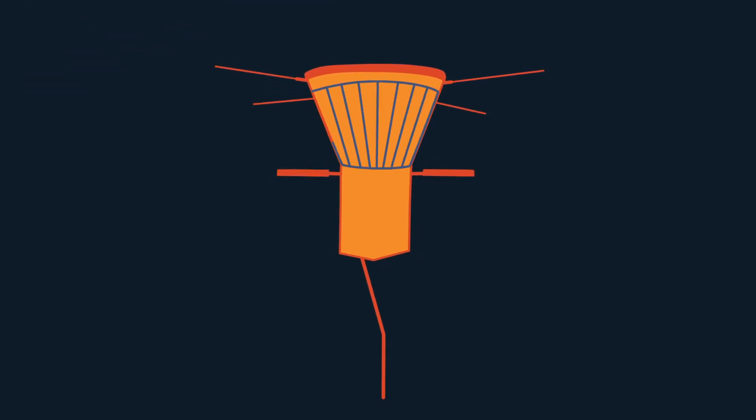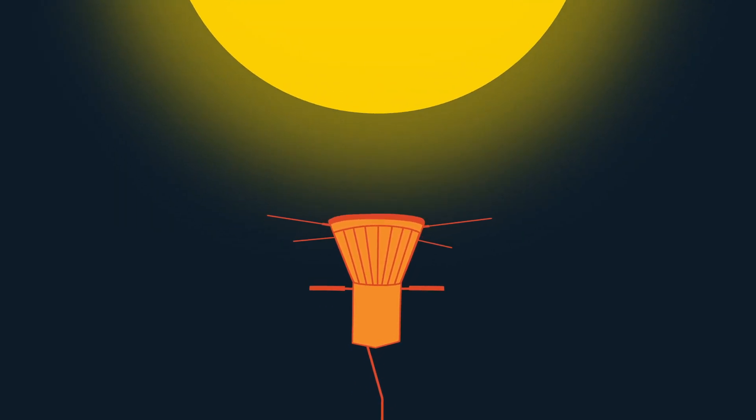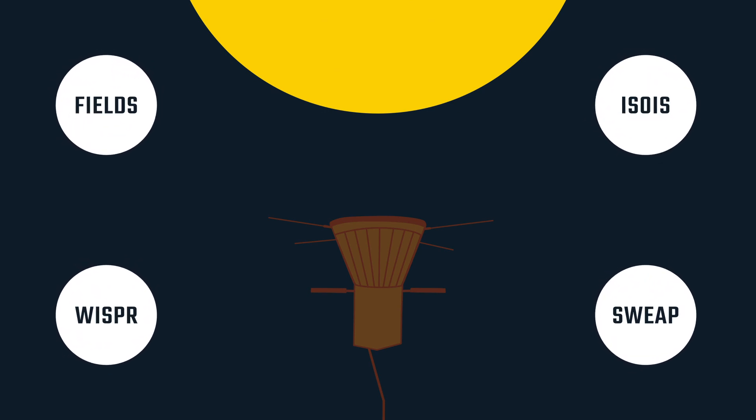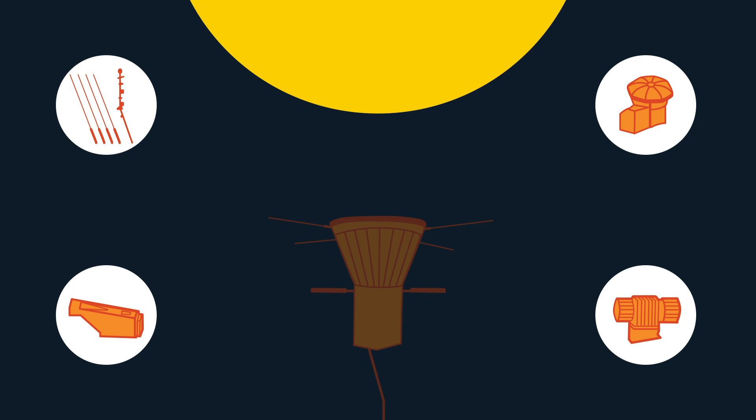Parker Solar Probe also carries a first-of-its-kind water-cooled solar array cooling system. Without it, the solar arrays would not survive the heat from the sun, and the probe would not have the power to operate the instruments that are exploring the sun's corona, or the systems that protect the spacecraft from the intense solar environment.